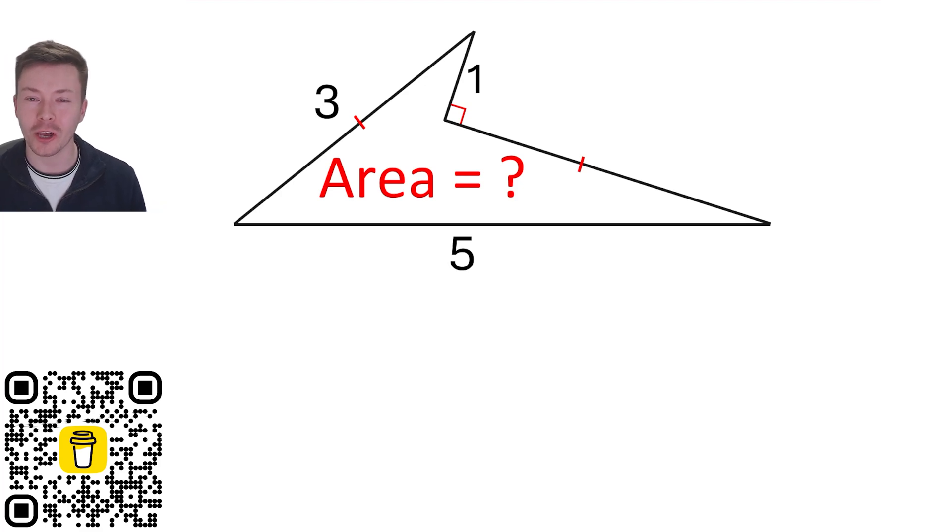Hi and welcome back to Mr. Talbot Maths video. In this week's video we've got this problem finding the area of this shape. The first things you might notice is that we've got lines through two of the sides, that means they're equal length, and we've got a right angle.